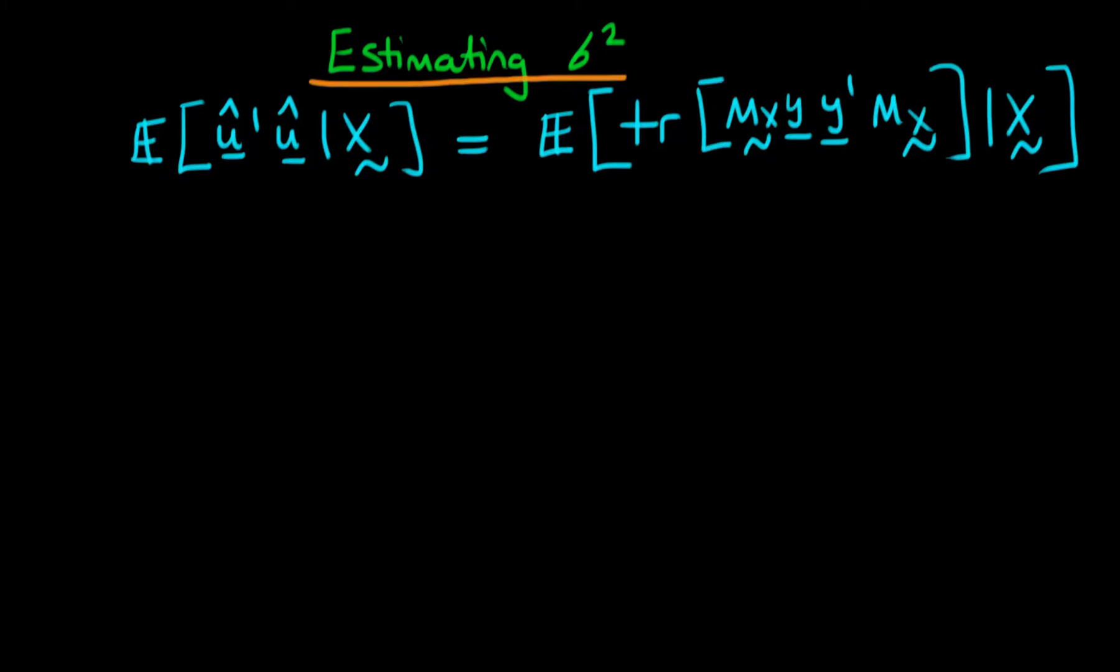In this video we are continuing our derivation of an unbiased estimator of sigma squared, and this is where we got up to at the last video. So we proved that the left hand side was equal to this right hand side.